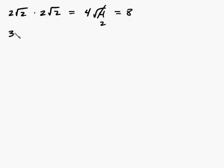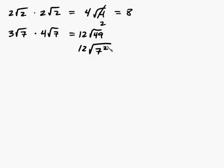Now how about 3 root 7 times 4 root 7. Well, 3 times 4 is 12. Root 7 times root 7 is 49. Another way to see this is 12 root 7 squared. The square and the radical sign cancel out when they're both the same. So this all cancels out. So it's 12 times 7. So 12 root 49 is 12 times 7, and that's going to be equal to 84.